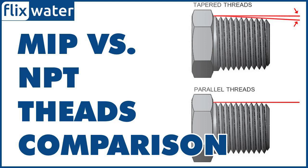MIP stands for Male Iron Pipe, and NPT stands for National Pipe Taper Thread. NPT threads are the standard for pipe fittings across the United States.